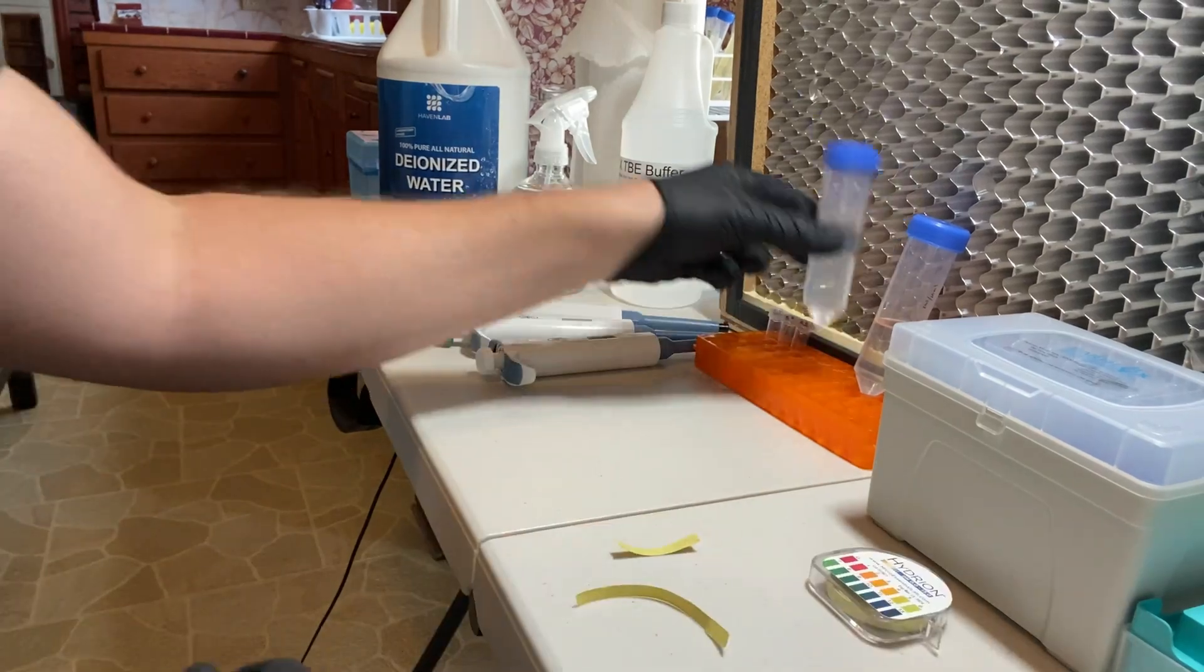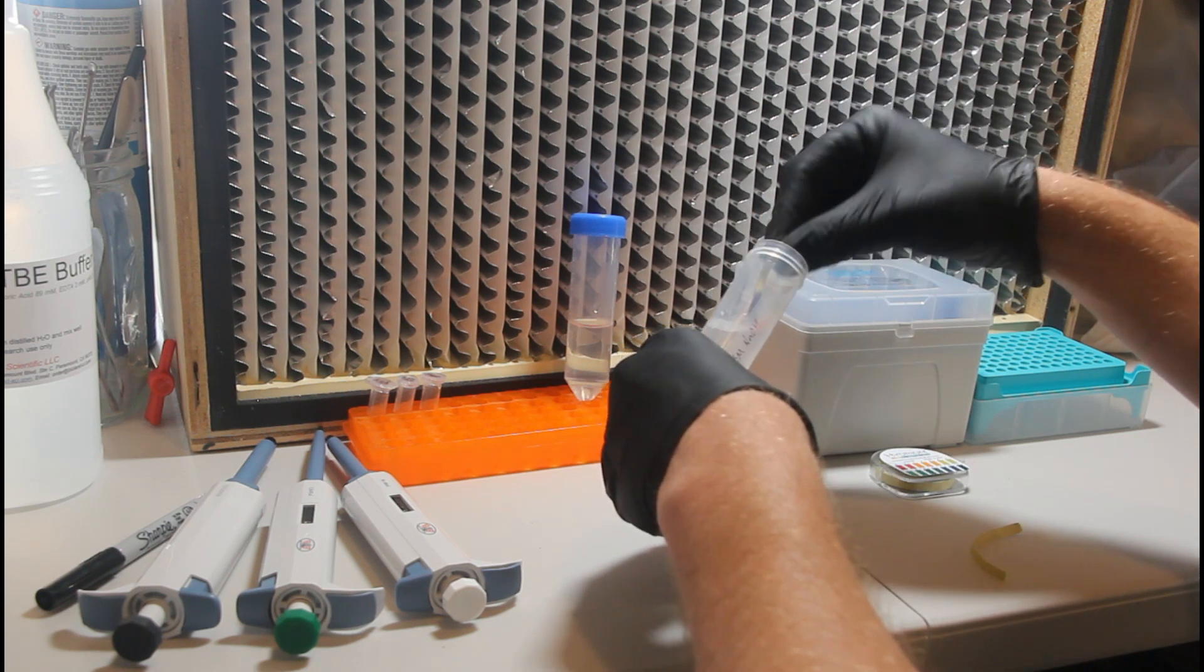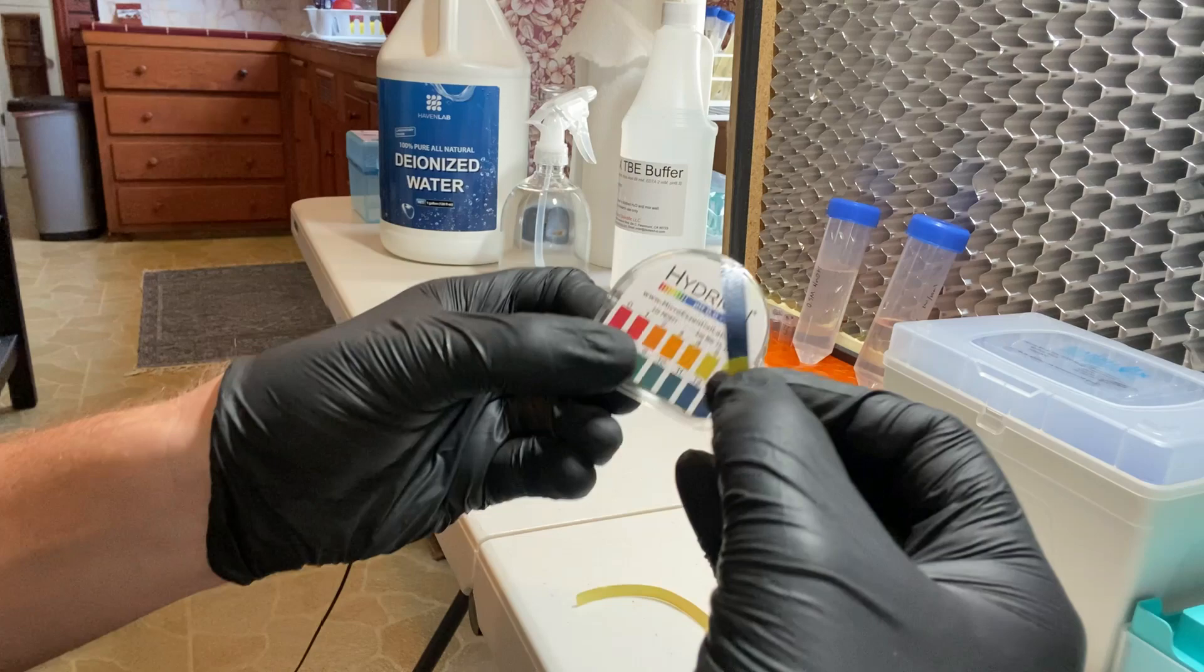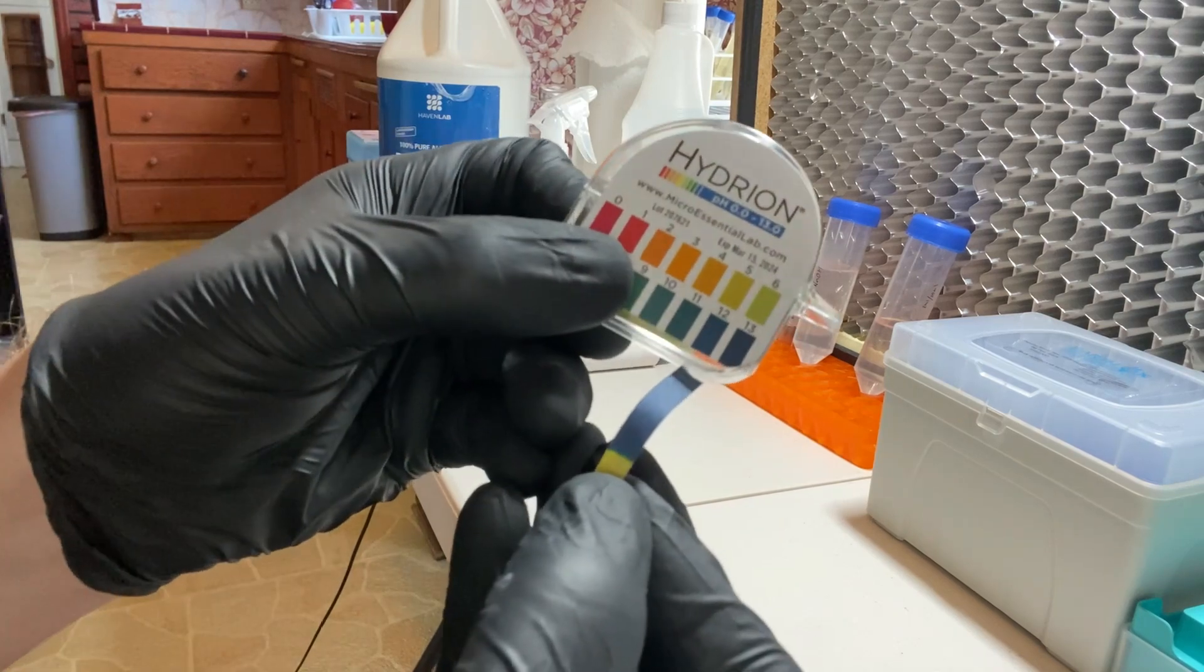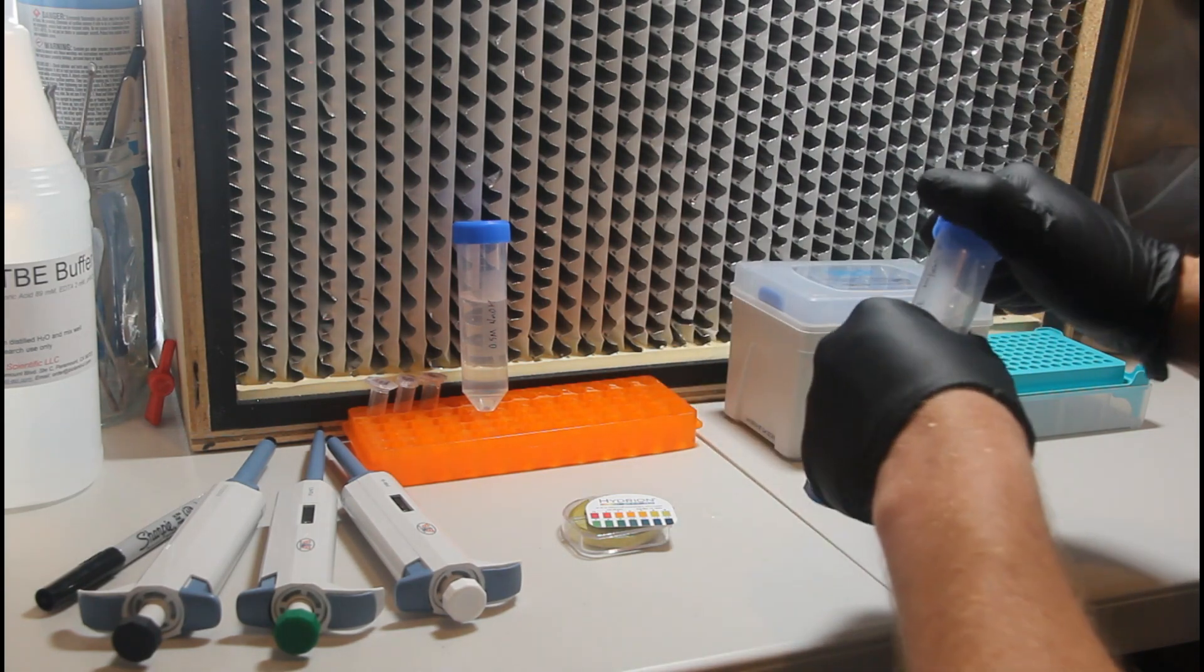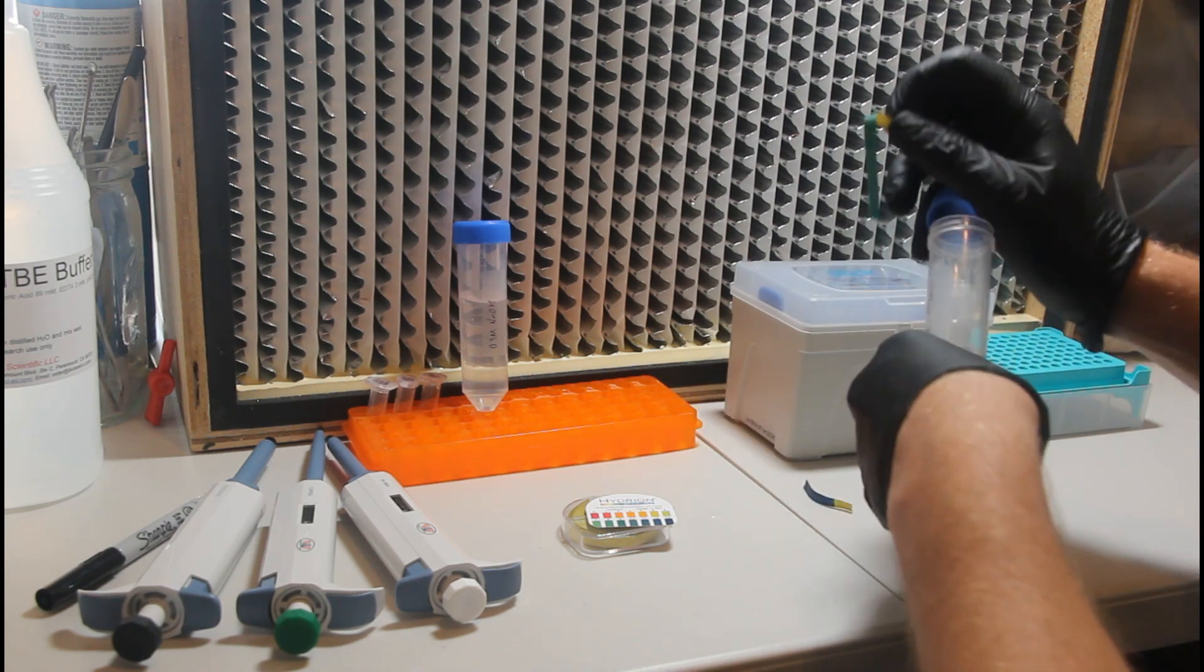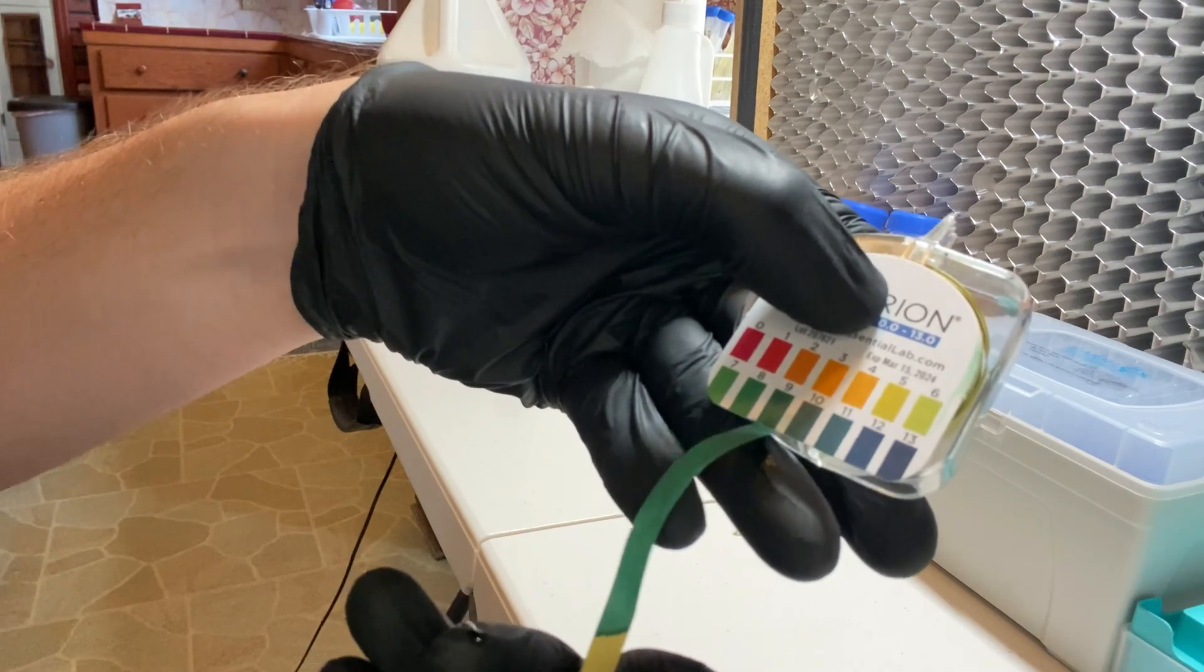Here I have some pH tape, just so we can do a quick check of the pH of both solutions. For the sodium hydroxide, we should expect that it is a strong base. And so here I'm just dipping some of that tape in there and we'll use this little chart to confirm that it is about a pH 12 to 13. We'll do the same with the 1x TBE working solution. And this should be at pH 8. And it looks right on the money.